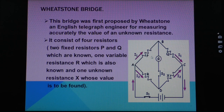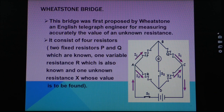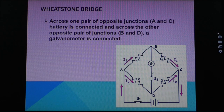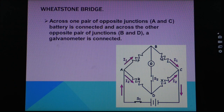This is the circuit diagram where there are four resistors P, Q, R, and X. P and Q — the resistance of these two resistors are known. R is a variable resistor, meaning its resistance could be changed. These resistors are connected making a junction where there are two loops.